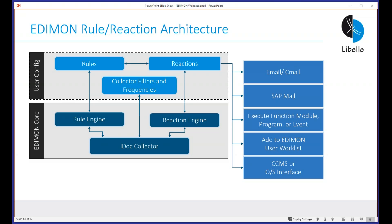What's also important is the separation between the core software and the configuration. This is not an ABAP transport you continuously change — the collecting program, rule engine, and reaction engine stay the same as the ABAP core. All rules and configurations live inside the EDMON tool in its own namespace. The reactions we can trigger include: sending emails, sending SAP emails, executing function modules, programs, or SAP events. We also have two concepts: a user worklist and user forms.